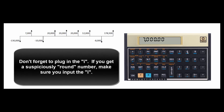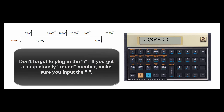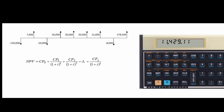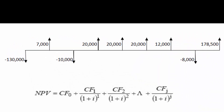Let's plug in the interest rate: 8 I. Then hit F-NPV — $11,429. Since it has a positive net present value, we do this project. Doing this project adds $11,429 of value to our company. What the calculator did was take the initial cash flow (a negative number) and added the present value of each future cash flow to get the net present value.